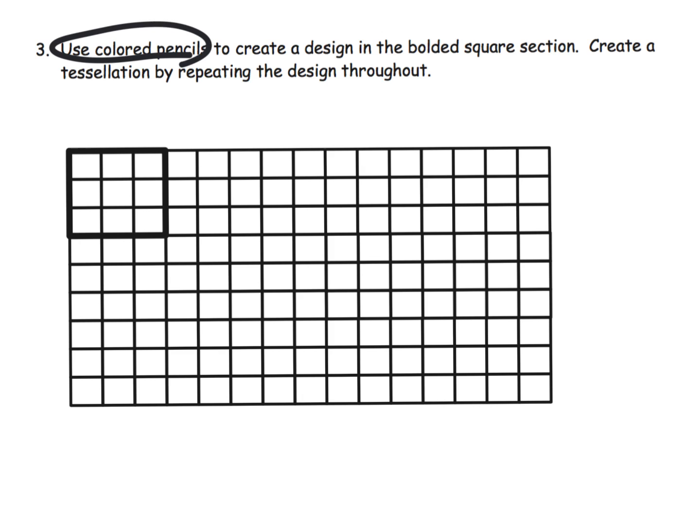Here students are being asked to use two colored pencils to create a design that we're then going to recreate over and over. We're going to tessellate it. A tessellation is a shape that repeats over and over, leaving no gaps and has no overlaps. So we're going to create a design. This is just an opportunity for your students to go wild and let them really get crazy as they think about what should their design look like.